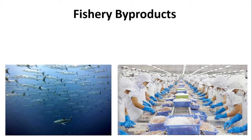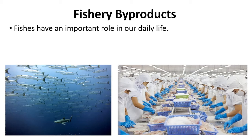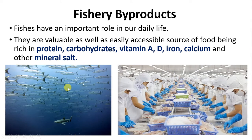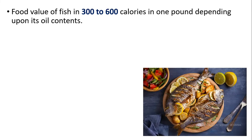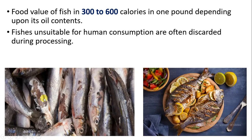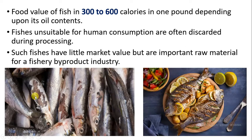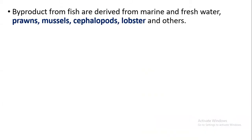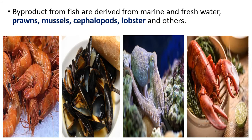Welcome students. Today we are studying a new topic that is fishery byproducts. Fish is very important as a food material because it contains huge amounts of protein, carbohydrates, vitamin A, vitamin D, iron, calcium, and mineral salts. In one pound of fish there are about 300 to 600 calories present, depending upon the oil content. Fishes unsuitable for consumption are discarded during processing, and those with low market value are used to produce byproducts in fishery industries. Byproducts are obtained from prawns, mussels, cephalopods, lobsters, and others.